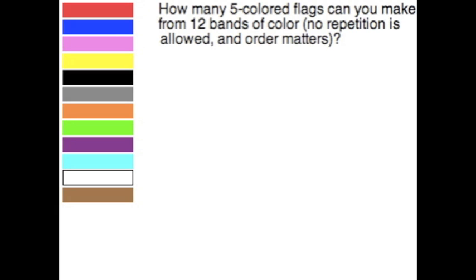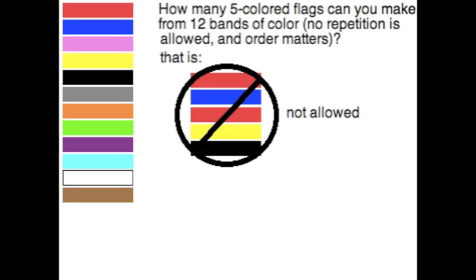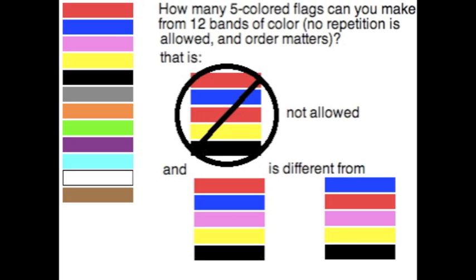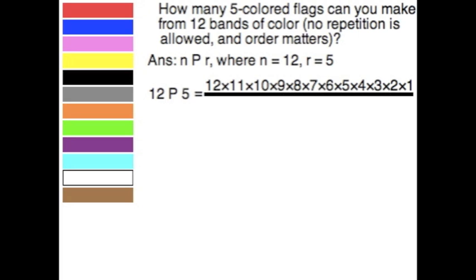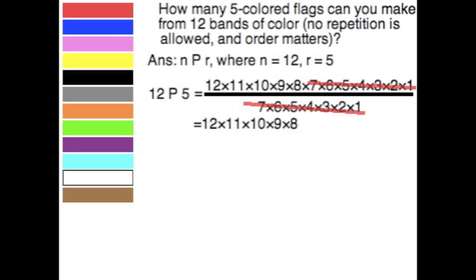You arrange r things from a set of n, and that's a permutation — it's when the order of things matters. A straightforward calculation: n multiplied down to one, or n factorial, divided by n minus r factorial.